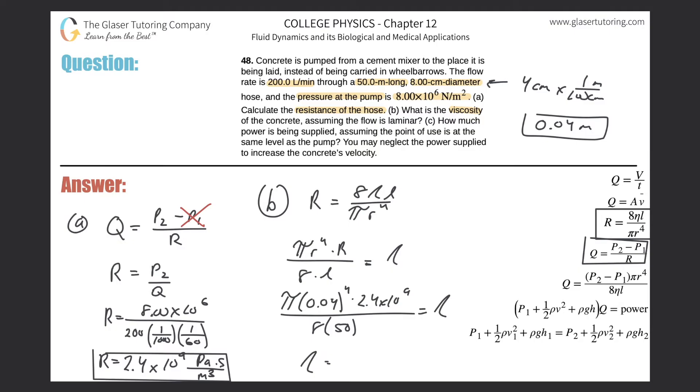So the viscosity here will be: take that value, multiply it by π, and then 0.04 raised to the fourth, and then multiply it by the resistance, and then divide that now by 8 times 50.